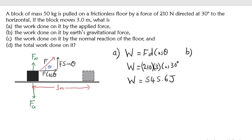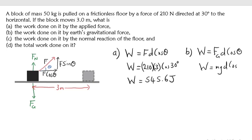Part B: the work done by the gravitational force. Using the same formula, W = F_gravity × d × cos theta, where the gravitational force is mg. Now, what is the angle between the displacement and the gravitational force? Looking at the diagram, the displacement is horizontal and gravity acts downward — they meet at a right angle, so the angle is 90 degrees. Therefore, the work done by gravity is zero joules.